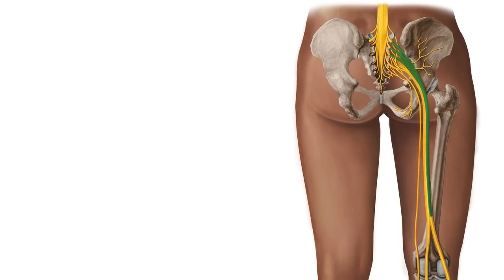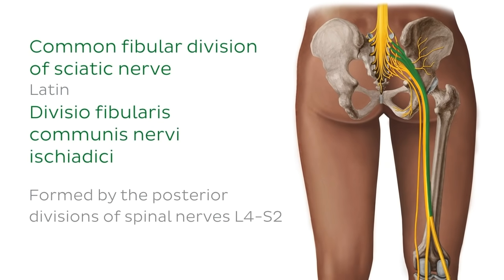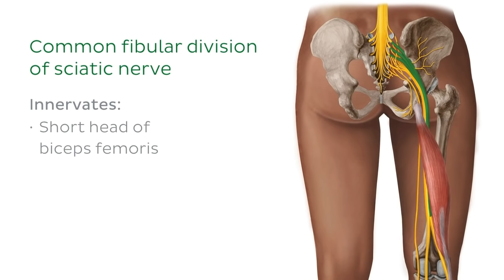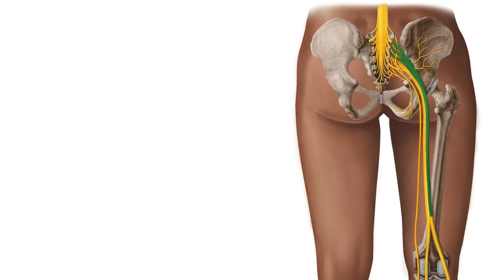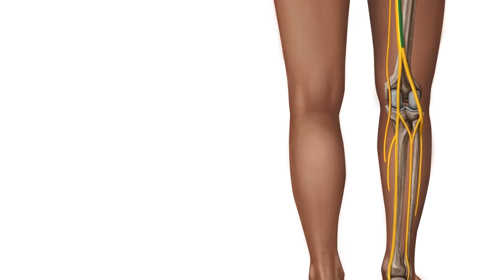We can see the common fibular division of the sciatic nerve, which is formed by the posterior divisions of spinal nerves L4 to S2. In the posterior compartment of the thigh, the common fibular division of the sciatic nerve innervates the short head of the biceps femoris. Assuming that the sciatic nerve does bifurcate at the apex of the popliteal fossa, let's take a look at its terminal branches.